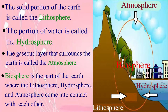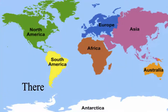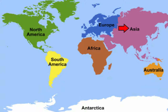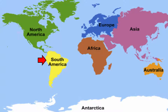All forms of life are found in the biosphere. There are seven continents on the earth: Asia, Europe, Africa, North America, South America, Australia, and Antarctica.